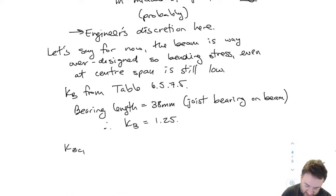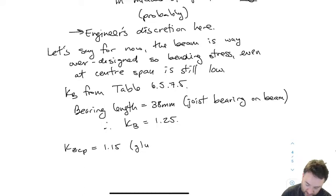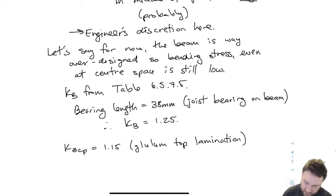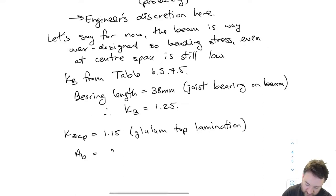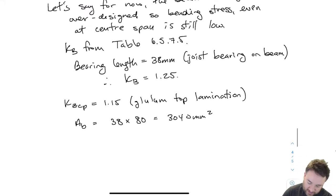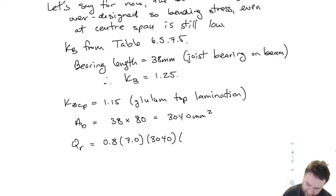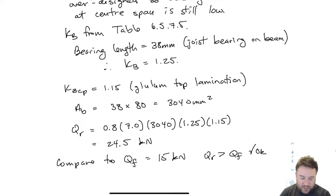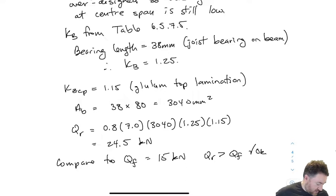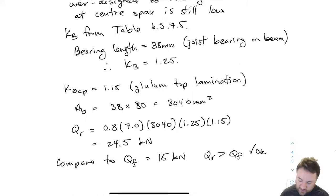The bearing area AB is the same as for joist two: 38 by 80 = 3040 mm². Calculating QR for the effect of all applied loads with KB now equal to 1.25 gives a value 1.25 times greater than the 19.6 we got previously. Comparing to the applied load of 15 kilonewtons from joist three, QR is greater than QF, so I'm good to go. Those are all the bearing checks for the beam.